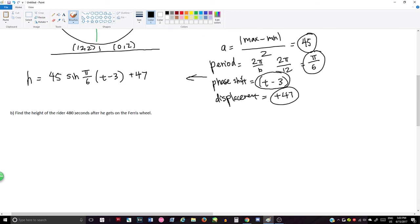Now we can find the height of our rider 480 seconds after he gets on the Ferris wheel. Because this is in seconds, we have to convert it into minutes in order to get our result. So that's just 480s divided by 60. Typically these are usually written in seconds, but this particular one is in minutes. So we have 8 minutes here, and we can input that into t, so t equals 8.